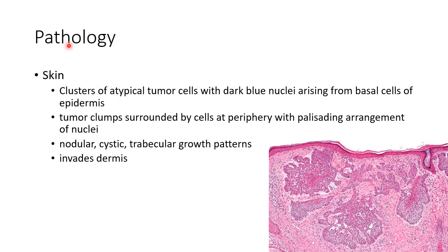Pathologically, the skin shows clusters of atypical tumor cells with dark blue nuclei arising from the basal cells of the epidermis. The tumor clumps are surrounded by cells at the periphery in a palisading arrangement of nuclei. They may have nodular, cystic, or trabecular growth patterns. As seen in this picture, the tumor cells invade the dermis.